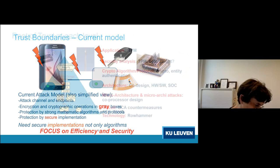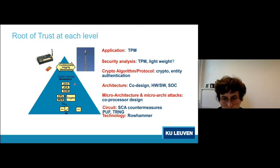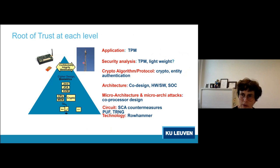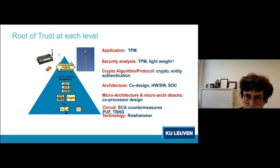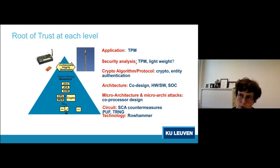Attacks are everywhere at every level of abstraction. To bring order to this, we use the concept of the trust pyramid. At any design you have many levels of abstraction. You might start with an application like a TPM or secure smartphone communication. The TPM relies on crypto algorithms and protocols — the root of trust for a TPM is actually strong crypto. If the crypto is broken, the TPM won't work.